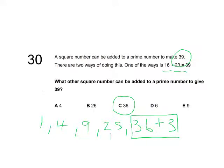If it was 25, it would be 25 plus 14, and 14 isn't prime, so it's not 25. If it was 9, it would be 9 plus 30.